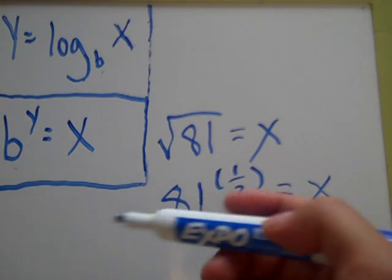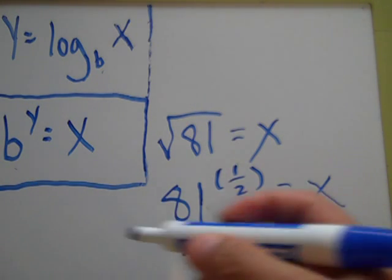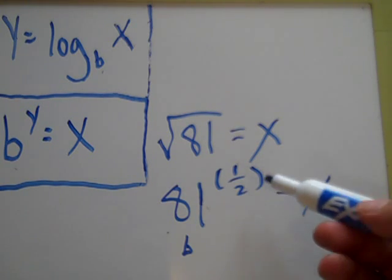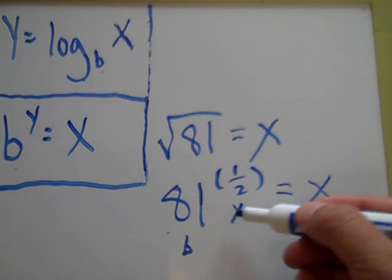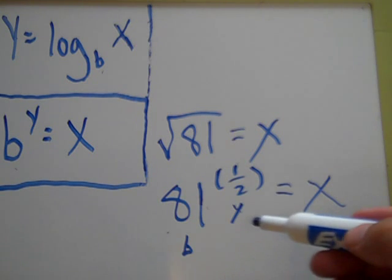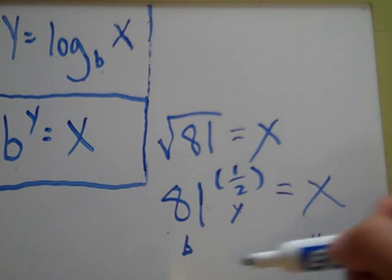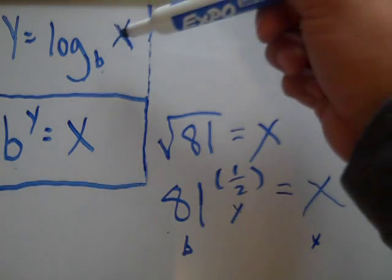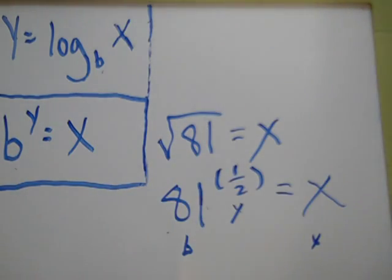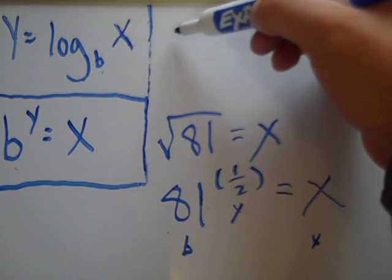So 81 is the same thing as b, the base. The half exponent is the same thing as y right in here. And of course this is still x. So all you got to do is rearrange those letters to look like this, in this form. So it's asking for y, right?